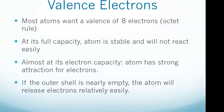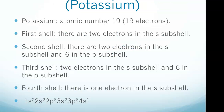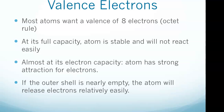The electrons in the outermost shell are called valence electrons. These electrons are crucial to forming bonds with other atoms in chemical reactions. Most atoms want a valence of eight electrons — this is known as the octet rule. Exceptions include helium, which has a full valence of two electrons, and hydrogen, which has one electron in its valence shell. If the outer shell is exactly at full capacity, the atom is stable and will not react easily.